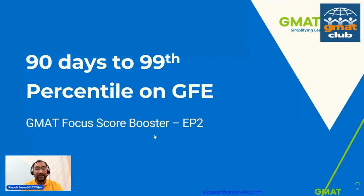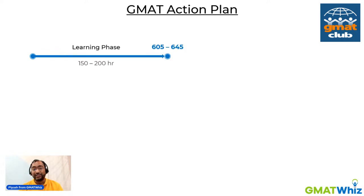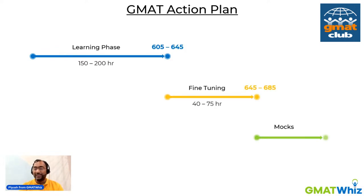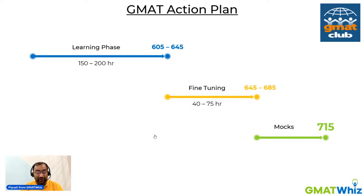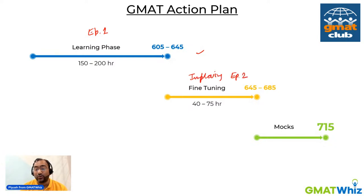So without further ado, let's get going directly into the session. In the last session, we talked about the GMAT Action Plan and broke down the GMAT Study Plan into three stages. The first stage was the learning phase where you do the majority of the heavy lifting — about 150 to 200 hours of effort. That's what we covered in episode one. Now we'll talk about the fine-tuning stage, the second stage where you focus on improving your weak areas.